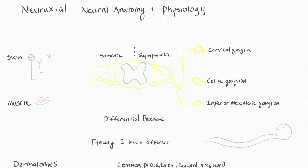Here I'll go over some basic neural anatomy and physiology as it pertains to neuraxial anesthetics. I've drawn here a spinal cord. We'll talk about the sympathetic and somatic afferents and efferents that will be blocked by a neuraxial technique. Obviously you have both sympathetic and somatic leaving from both the left and right side of the spinal cord, but they're separated here so this diagram doesn't get too crowded.